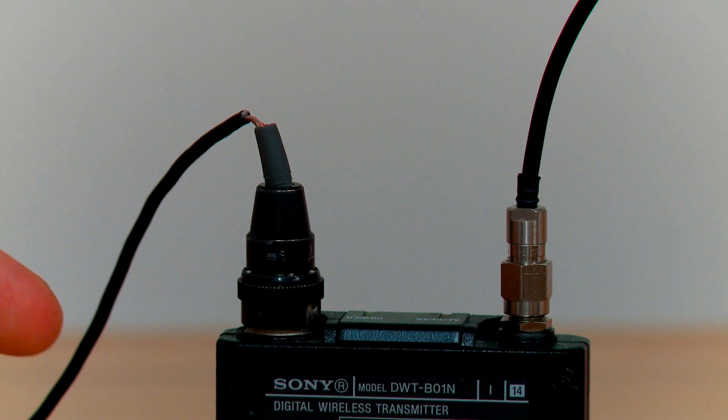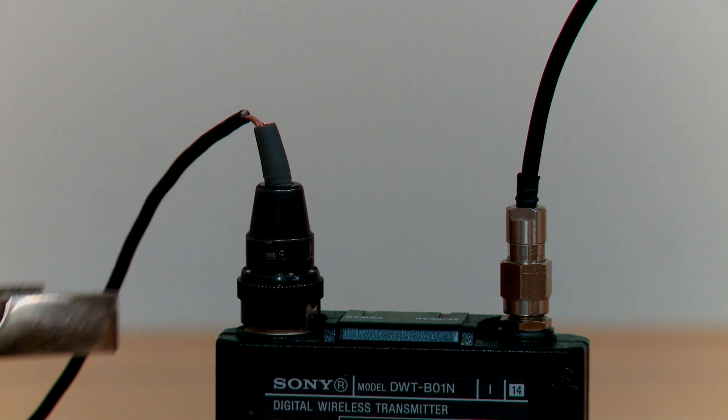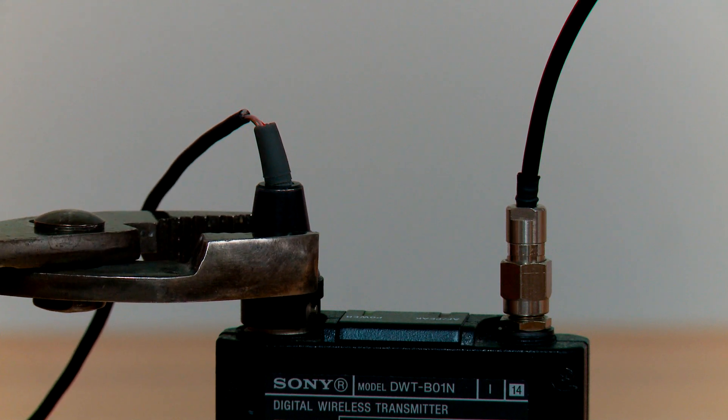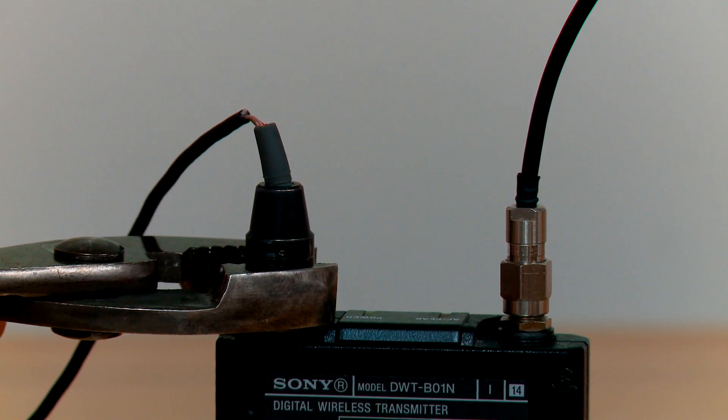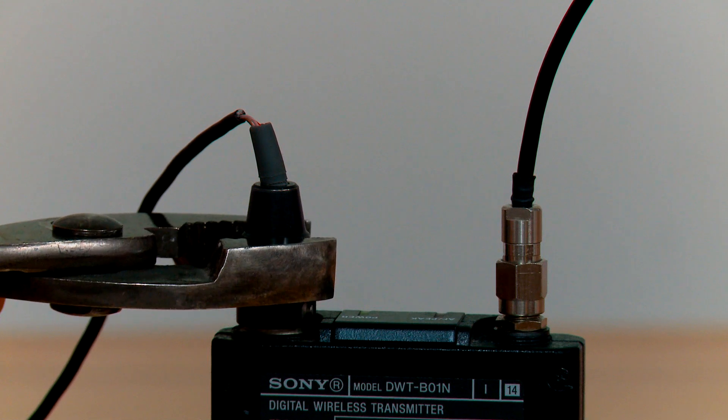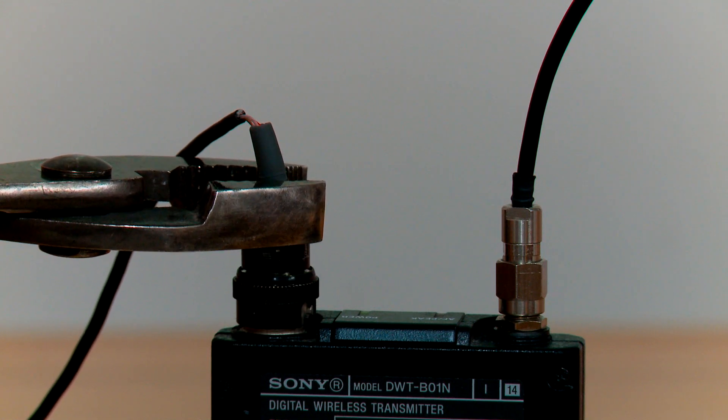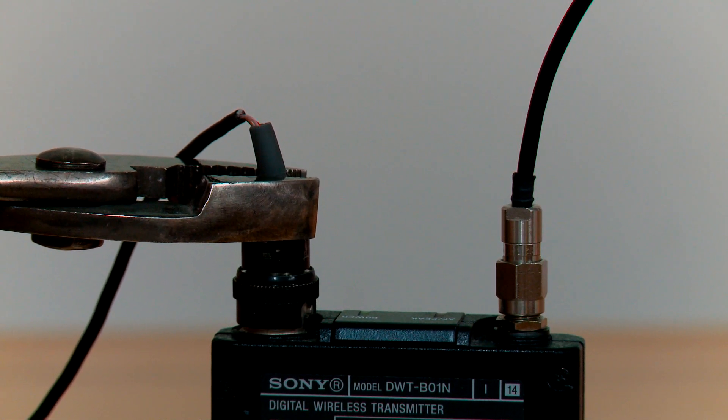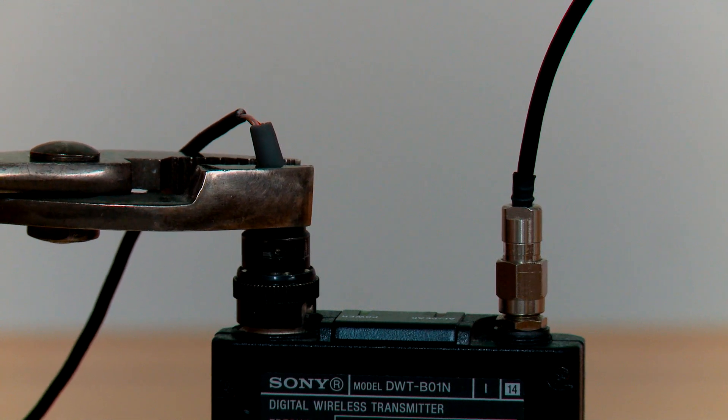Next, with the connector plugged into the wireless transmitter, you need to grab this bottom ring with a pair of slip joint pliers and then this section with a pair of slip joint pliers.